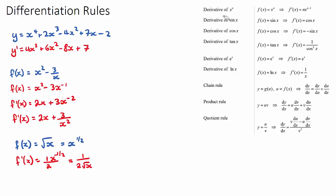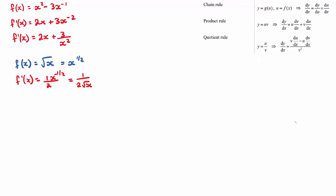If we have a sine or cosine trig function, the derivative of sine x becomes cos x. For example, if y equals sine of 2x, the derivative of sine goes to cos, but we also need to factor in the derivative of what's inside the bracket. The derivative of 2x is 2, and that goes out to the front, giving y dash equals 2 cos 2x.